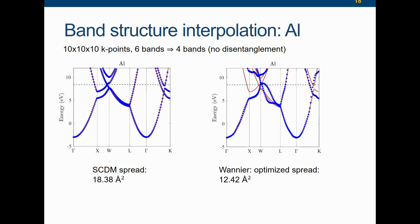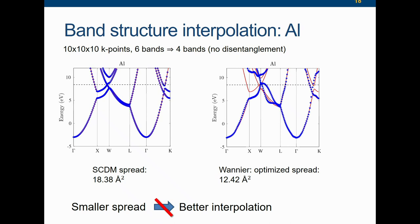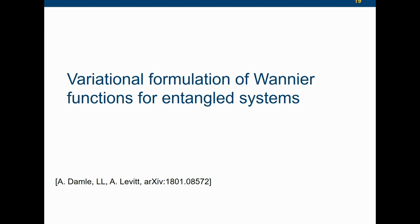Spread is not everything. Here is a quantitative example using 10×10×10 k-points. You start from six bands and would like to reduce to four. If you directly use SCDM without disentanglement, it interpolates very nicely up to and even slightly above the Fermi surface. The SCDM orbitals have a total spread of 18.38 Ångström squared. If you turn on disentanglement in a poor way — focusing only on the spread — you can get orbitals with significantly smaller spread, but the band interpolation is garbage. The take-home message: especially for entangled bands, smaller spread does not necessarily mean better interpolation.